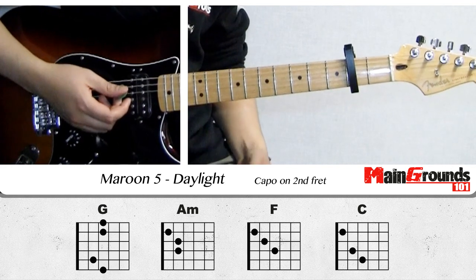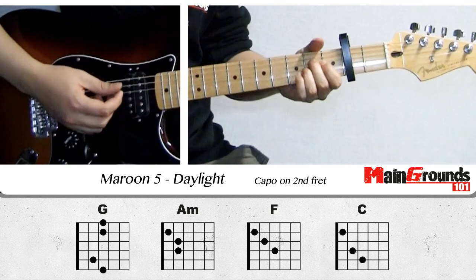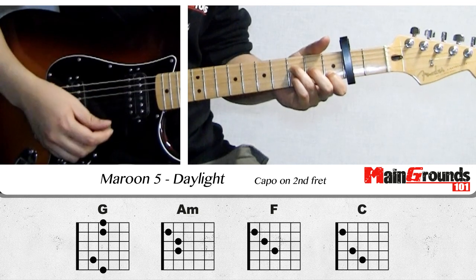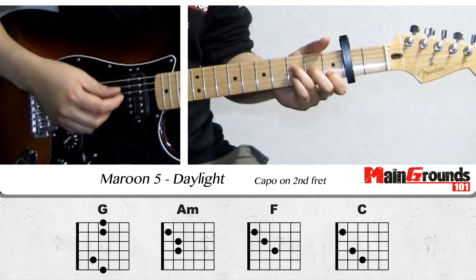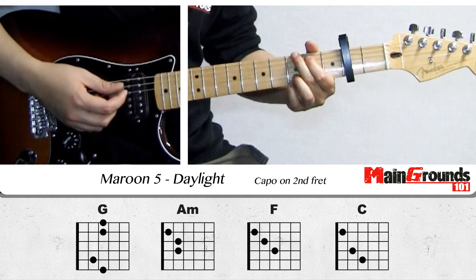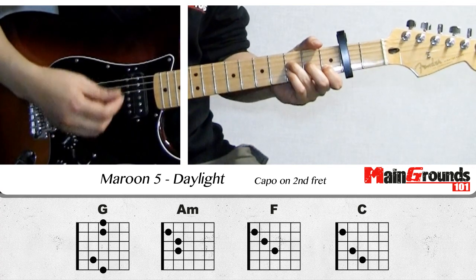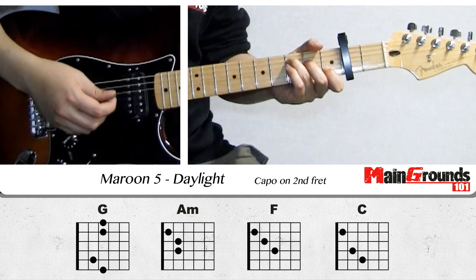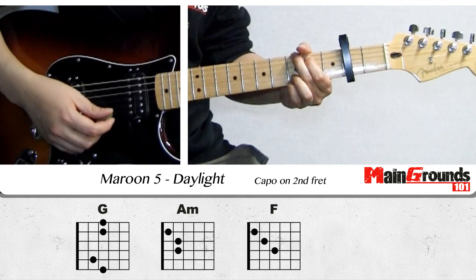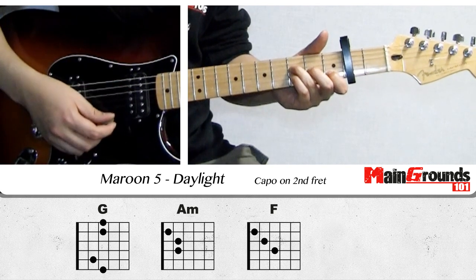And the last part is the bridge. That one starts with the G, and an A minor, and an F, and a C. So that first line is the G chord, then an A minor, and an A minor, and an A minor.